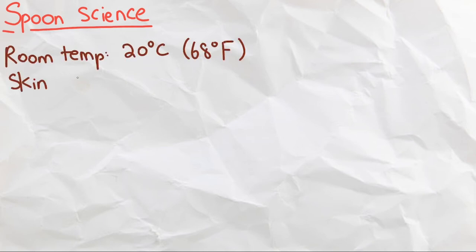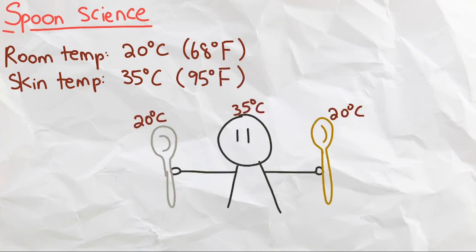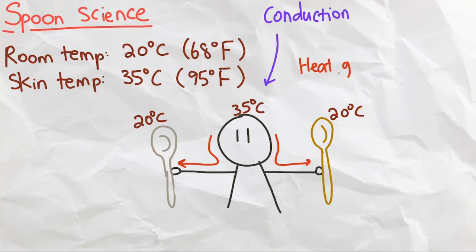So now, how about the metal wooden spoon? Since they are both at room temperature, at around 20 degrees, they are both lower than our skin temperature. This means that when we touch either spoon through conduction, the heat from our hand will transfer to the spoons because we have more heat. However, what is important here is the materials of the spoons.